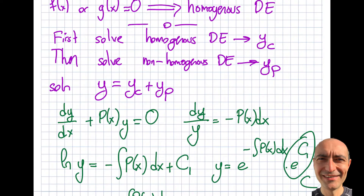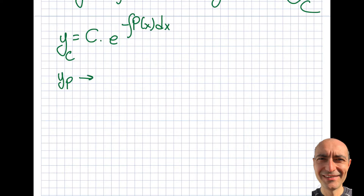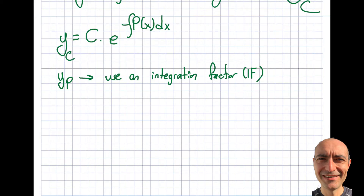Now the question is how to get Yp. In order to obtain Yp for the non-homogeneous equation, I need to use an integration factor, which I'll call IF. This integration factor will be used extensively when solving higher order differential equations as well. The integration factor is defined as IF = e to the power of the integral of P(x)dx. Note the important difference: there is NO negative sign here, but there IS a negative sign in the complementary solution — confusing these two is a common exam mistake. Multiply both sides of the linear differential equation by this integrating factor, and you'll be able to integrate.